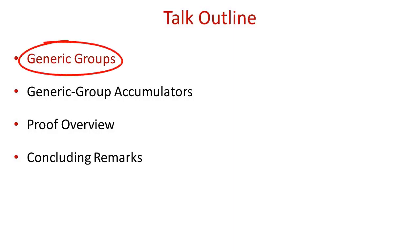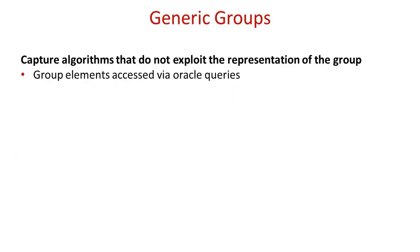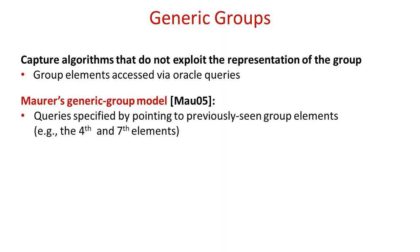A generic group algorithm is an algorithm that does not exploit the representation of the underlying group in any way. This is captured via an oracle which manages the access of all algorithms to the group. In this work, we use the generic group model suggested by Maurer. In this model, group elements do not have an explicit representation; instead, algorithms specify their queries by pointing to previously seen group elements. For example, an algorithm may ask the oracle to apply the group operation to the fourth element and the seventh element that have appeared in the computation so far.